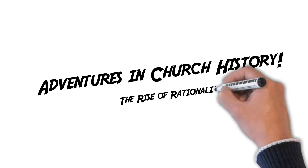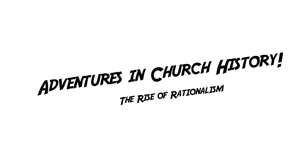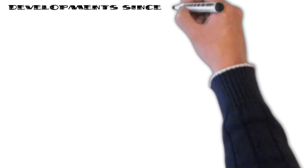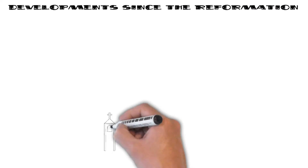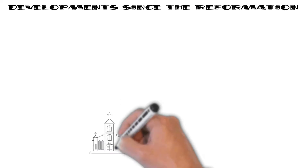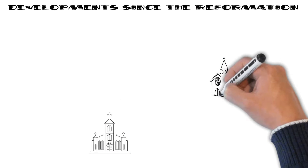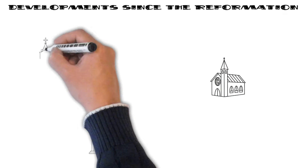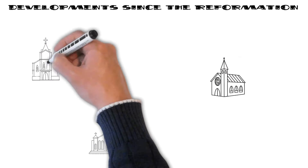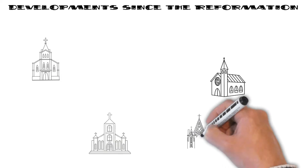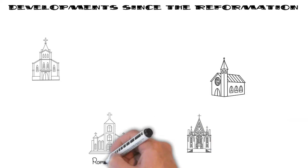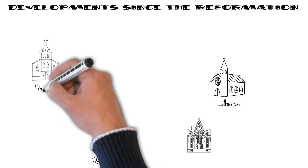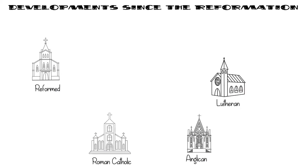It's time for another exciting adventure in church history. Over the last few videos, we looked at how the Reformation led to several different church bodies developing: the Roman Catholics, the Lutherans, the Reformed, the Anglicans, and the Anabaptists.